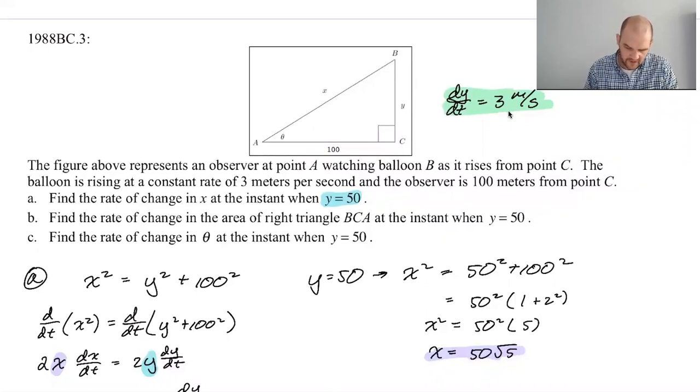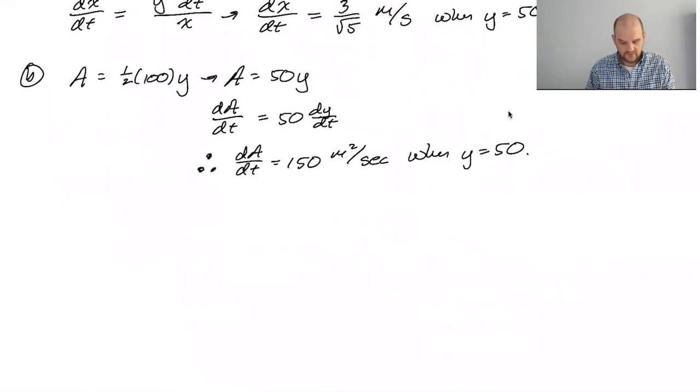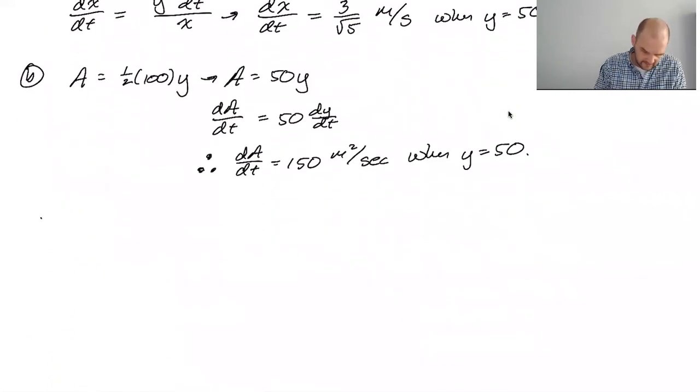So what I'm going to do is, we're looking for dθ/dt and we know dy/dt. So I'd like to do something that involves this, this, and like why involve a variable when we could do this, this, and this. So the tangent of theta is opposite over adjacent. So tan of theta is y over a hundred and we'll go from there.